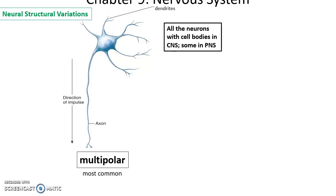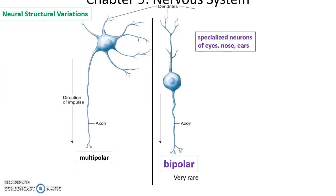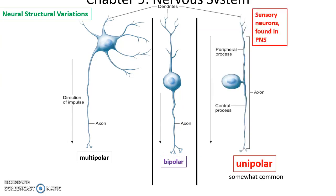There are some structural variations in neurons. We have the multipolar neuron — the most common — with lots of dendrites coming into the cell body, which then leads to the axon. Found in all cell bodies in the central nervous system and some in the peripheral nervous system. Then we have the bipolar neuron, extremely rare, where you have dendrites at one end leading to the cell body, which then becomes the axon at the other end. Bipolar neurons are mostly specialized neurons for sensations found in the eyes, nose, and ears. Finally, we have the unipolar neuron, somewhat common — all of the sensory neurons in the peripheral nervous system — where the dendrites lead into the axon and the cell body is completely bypassed.